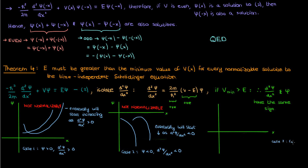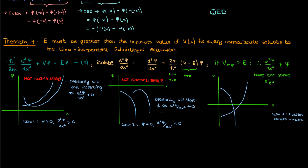In the final scenario where the function crosses the x-axis because its derivative has a large enough magnitude, even if it crosses, it never comes back. If we start out positive and cross to the negative side, ψ continues to fall. If we start out negative and cross to the positive side, ψ continues to rise. In any scenario, we cannot have a normalizable function as long as the potential is always greater than E, and this proves the theorem.